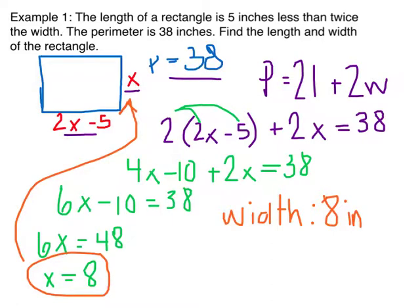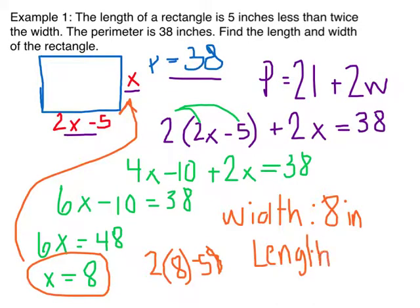Go back to your original problem where you wrote out the information. You know that if the width is x, the length is 2x minus 5. So, the length would be 2 times 8 minus 5, which is 16 minus 5. Then, we know the length is 11 inches.